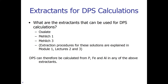The extractants we can use for DPS calculations include an oxalate extractant, a Mehlich-1 extractant, or a Mehlich-3 extractant. These extractant procedures are explained in Module 1, Lectures 2 and 3. DPS can therefore be calculated from P, iron, and aluminum in any of the above extractants.